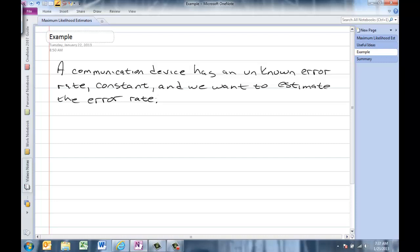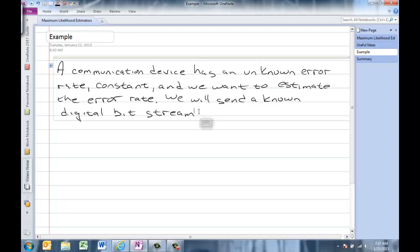The way we're going to do this is we are going to send a known digital signal through the communication device. I'll call it a digital bitstream. It's just a stream of zeros and ones. We're going to send that bitstream through the communication device and see if it's received correctly. Determine if the bits are received correctly.